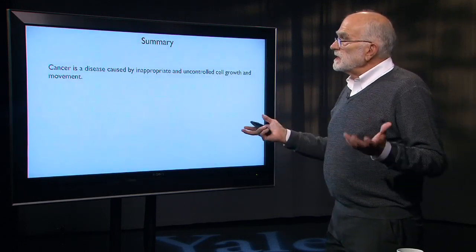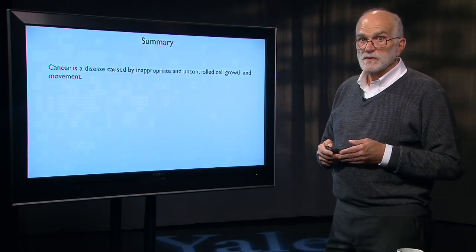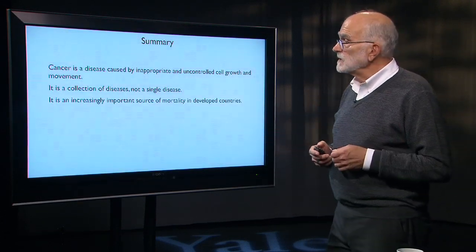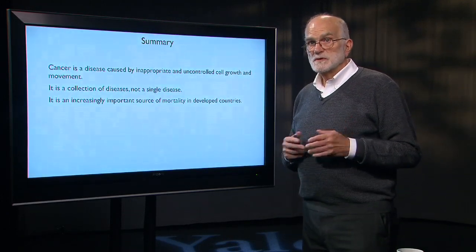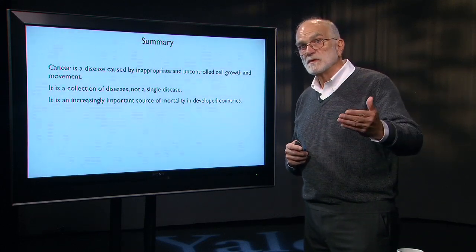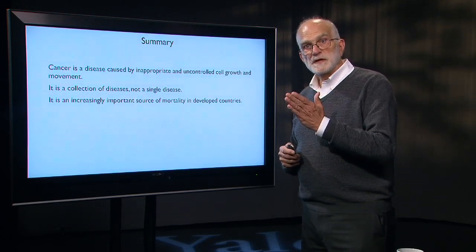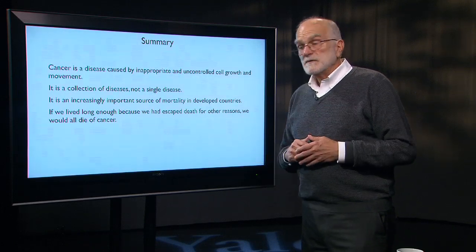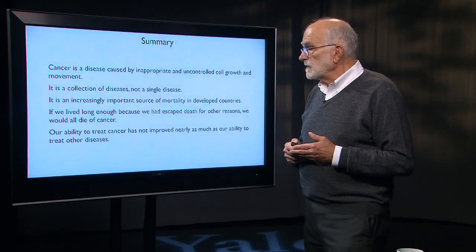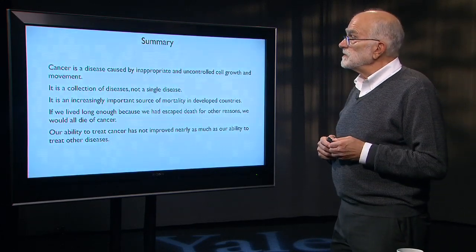To summarize: cancer is a disease caused by inappropriate and uncontrolled cell growth and movement. It is a collection of diseases, not a single disease. It is an increasingly important source of mortality in developed countries — since the demographic transition, as we no longer die primarily of infectious disease, cancer has become more important as we age. Our ability to treat cancer has not improved nearly as rapidly as our ability to treat other diseases. If we lived long enough, having escaped death from other causes, we would all die of cancer.